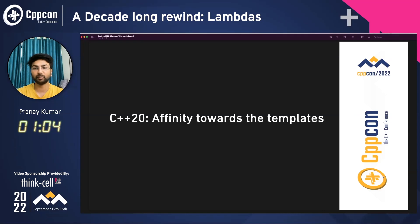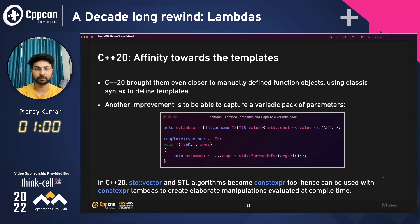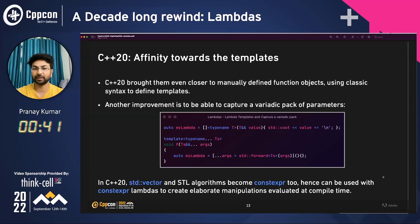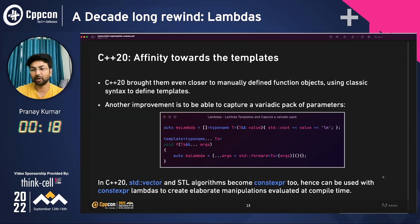Then came C++20, and lambdas got more aligned towards templates. C++20 brought them even closer to manually defined function objects using the classic syntax we used to define template functions. Another improvement was the ability to capture a variadic pack of parameters. As you can see in this code snippet, the lambda is written just like a typical template function, and T is a universal forwarding reference. Additionally, C++20 enabled types such as std::vector and other STL algorithms to get constexpr support, which combined with lambdas allowed elaborate manipulations to be evaluated at compile time.